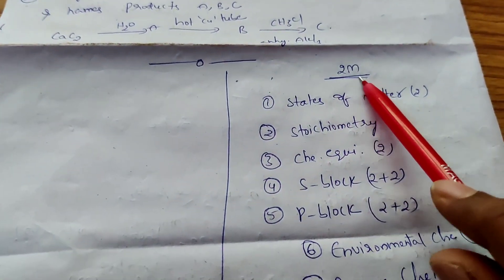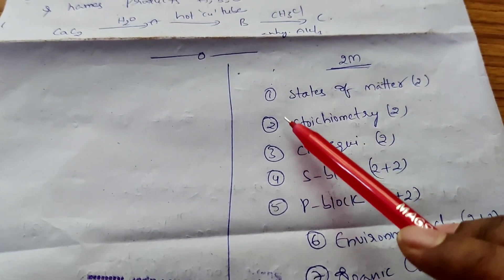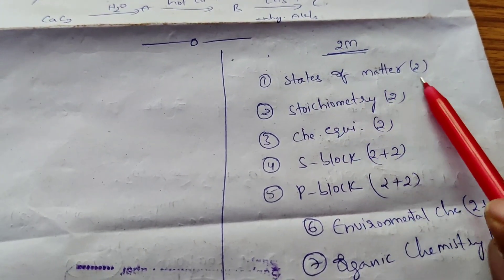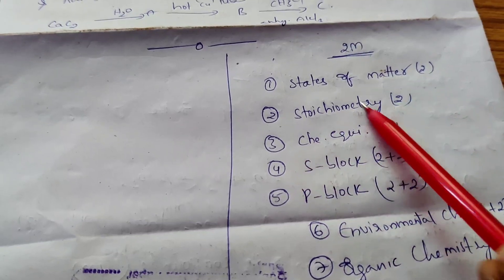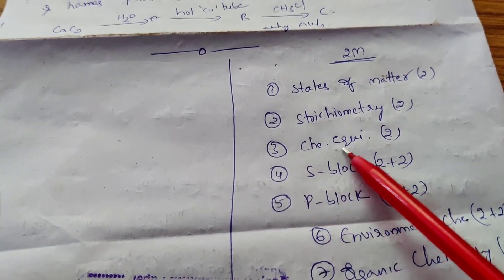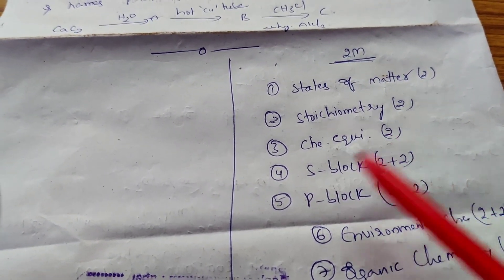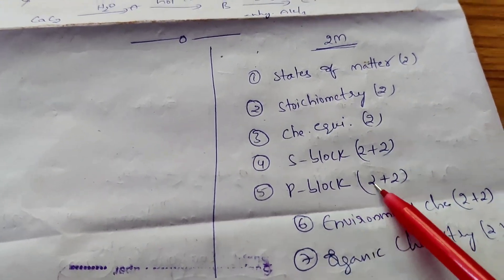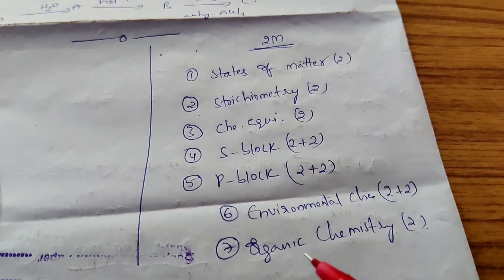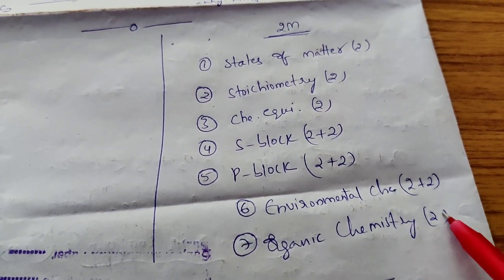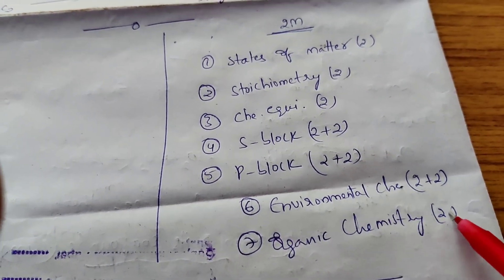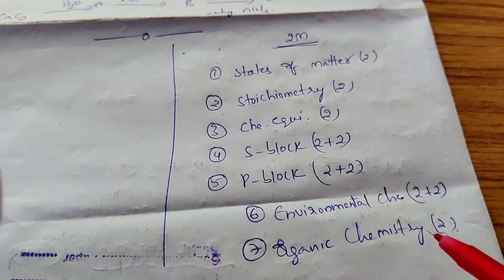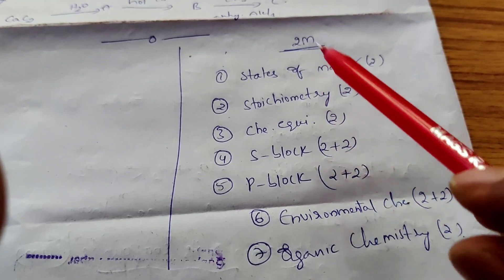For the 2-mark questions, the chapter-wise distribution is as follows: States of Matter — 1 to 2 questions; Stoichiometry — 1 to 2 questions; Chemical Equilibrium and Acids and Bases — 1 to 2 questions; S-Block — 2 questions; P-Block — 2 questions; Environmental Chemistry — 2 questions; Organic Chemistry — 1 to 2 questions; Nomenclature — maximum 2 to 3 questions, as per the course.